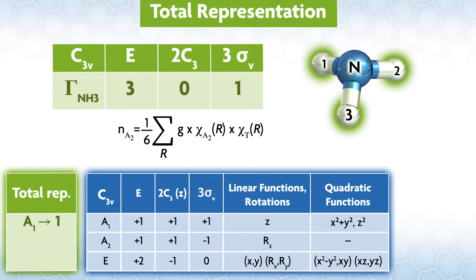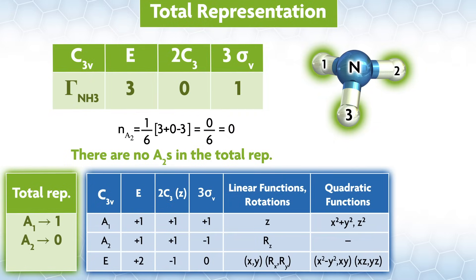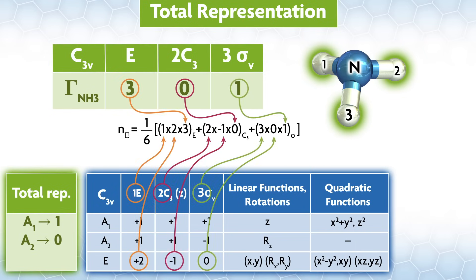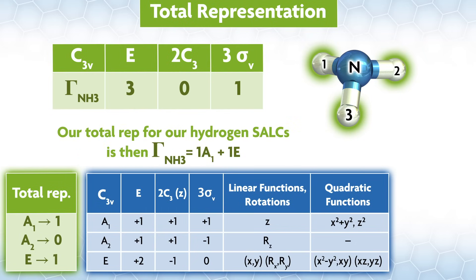Let's look at a2. How many a2s are in the total representation? There are no a2s in the total rep. At this point, we have a 3d total rep, and we know that we have one a1 and zero a2s in there. An a1 is one-dimensional, so we still need two dimensions to fill out our total rep, meaning there must be one e in there. But here's the equation anyway, if you want to see it. As a result, our total rep for the hydrogen SALCs is then gamma NH3 equals 1a1 plus 1e.